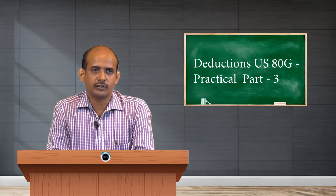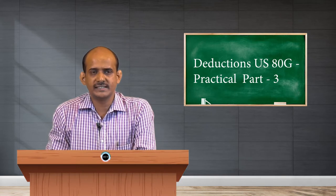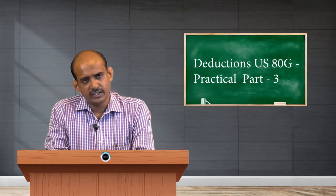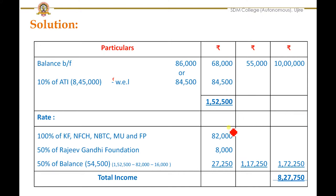For the purpose of your convenience, I have brought forward the balances from the previous table. The 86,000 you are seeing there is the actual donation calculated from the with-limit category. Then 68,000 is the total of donations from the without-limit category. Then 55,000 is the total donations from previous sections, that is from 80D and 80E, and in the last column you see 10 lakh, that is the gross total income.